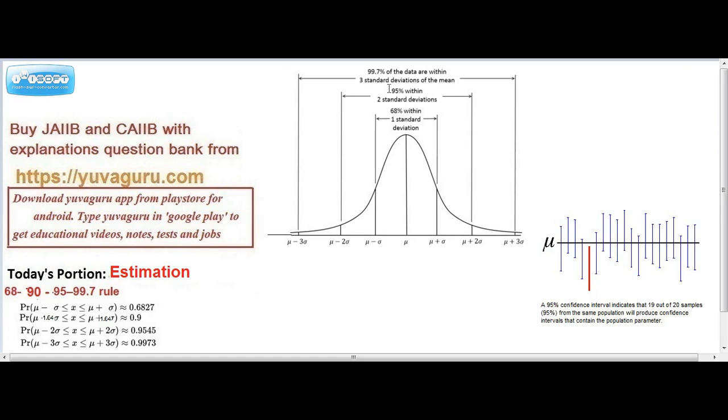So what does it mean? Suppose if I calculate 95% confidence level, it's explained over here. If I take 20 samples, out of them 19 samples would contain this parameter mu, would contain the mean. This is the parameter I have taken.